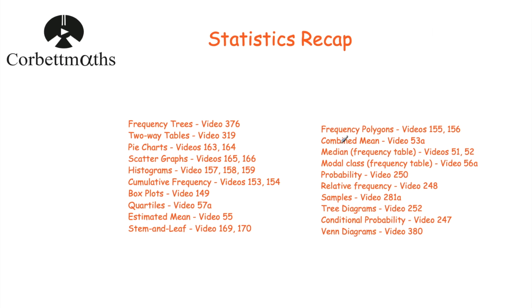Combined mean: to find the grand total, multiply the mean by the number of values. Then add the totals for each group and divide by the total frequency to find the combined mean. Also know how to find the median from a frequency table and the modal class — the one with the highest frequency.